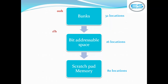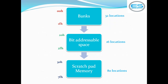The bank addresses run from 00h to 1Fh in hexadecimal, or 0 to 31 in decimal. The bit-addressable space has 16 locations starting at 20h and ending at 2Fh. From 30h to 7Fh is the scratch pad memory. These are the three individual sections from the 128 bytes of RAM memory.